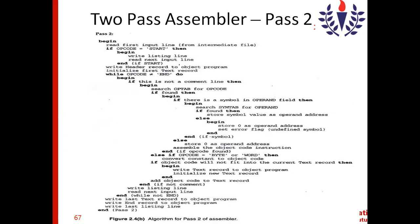So now we have the mnemonic value, the symbol address, and the machine address. The next step is to assemble the object code instruction. If the opcode equals BYTE or WORD, then the constant is converted into the corresponding object code — as shown in the previous session. Whether it is an integer constant or a character constant, it is converted into the appropriate numbers.